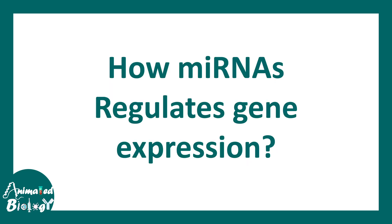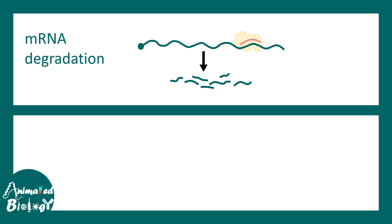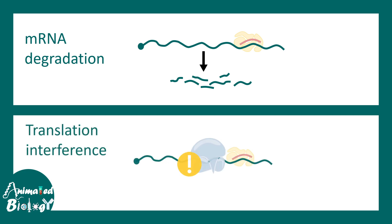Micro-RNAs regulate gene expression in two ways. First, they can down-regulate mRNA by degrading it — associated with the RNAi silencing complex, they chop off the mRNA, so less mRNA is available to produce protein. Second, micro-RNAs can interfere with translation. In some cases, the micro-RNA and the RISC complex sit at the 3' UTR but do not cleave the mRNA; instead, they act as a roadblock for the ribosome, interfering with translation.